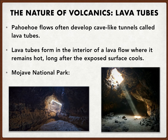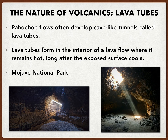Moving forward — lava tubes. What's interesting about lava tubes is we have them here in Mojave National Park. Often these flows will develop into cave-like tunnels called lava tubes. These lava tubes form in the interior of the lava flow where it remains very hot long after the exposed surface cools. You can actually walk down them and walk through the tunnel — it's kind of like a straw. As that material moves through and then once it's all passed through, all you're left with is the straw itself.